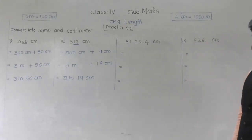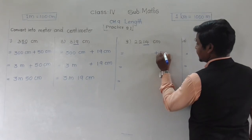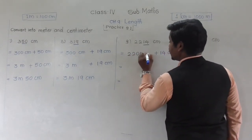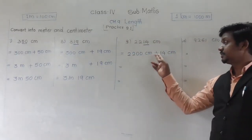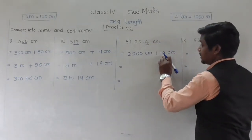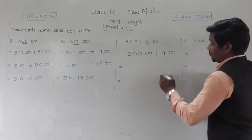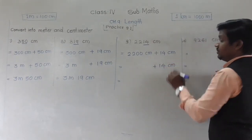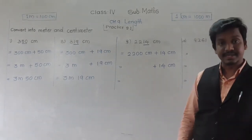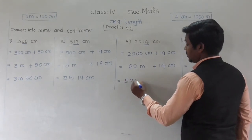Next: 2214 centimeters — how many meters and centimeters? Same method: underline the last two digits, which is 14, so 14 centimeters. The remaining part is 2200 centimeters — that is 22 followed by two zeros. So 2200 centimeters plus 14 centimeters equals 2214 centimeters. The 14 centimeters stays as is since it doesn't form a complete meter. The 2200 centimeters makes 22 meters because 100 centimeters equals 1 meter. So 2214 centimeters equals 22 meters 14 centimeters.